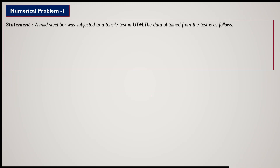First of all, let us understand the statement given. It mentions a mild steel bar. You have to check whether it is mild steel or another type of steel, because the stress-strain diagram we have gone through is particularly for mild steel. So if a mild steel bar is under testing, you can recall the stress-strain graph we discussed in detail. The bar is subjected to a tensile test, meaning tensile force is applied in a UTM — a universal testing machine.